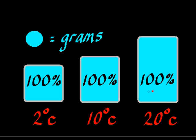A saturated parcel of air at 20 degrees centigrade can hold more water than a saturated parcel of air of the same size at 10 degrees centigrade. Likewise, a saturated parcel of air at 10 degrees centigrade holds more water than the same size parcel of air at 2 degrees centigrade. In other words, as we increase the temperature, the ability for a parcel of air to hold more water increases.